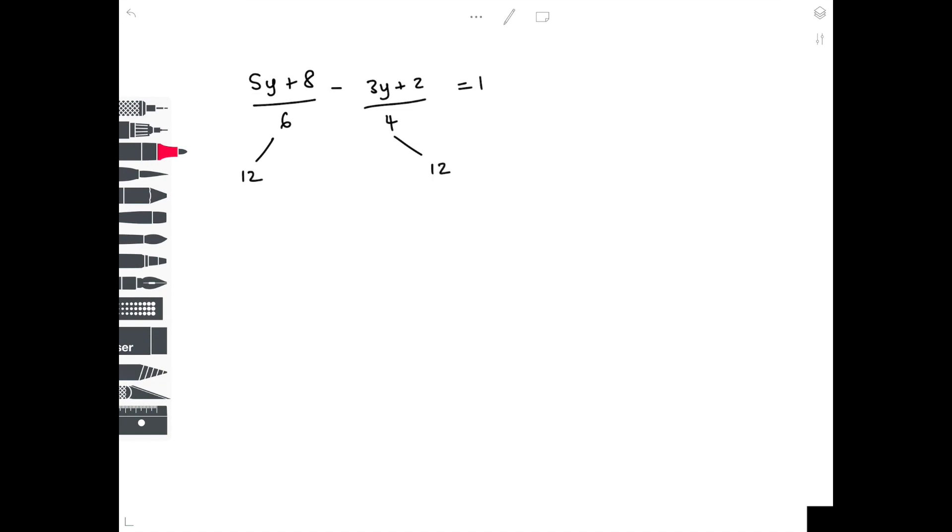So we multiply everything by 12. So that becomes 12 times brackets 5y plus 8. Keep that denominator the same. Minus 12 times 3y plus 2 over 4. And then don't forget to multiply that final number on the other side of the equal sign also by 12. The easiest thing to do here is cancel down, because you don't really want to be multiplying out these big numbers in the brackets. So 12 divided by 6 is 2. That gets rid of that 6. And then cancel down here. 12 divided by 4 is 3. And now we can multiply out our brackets.